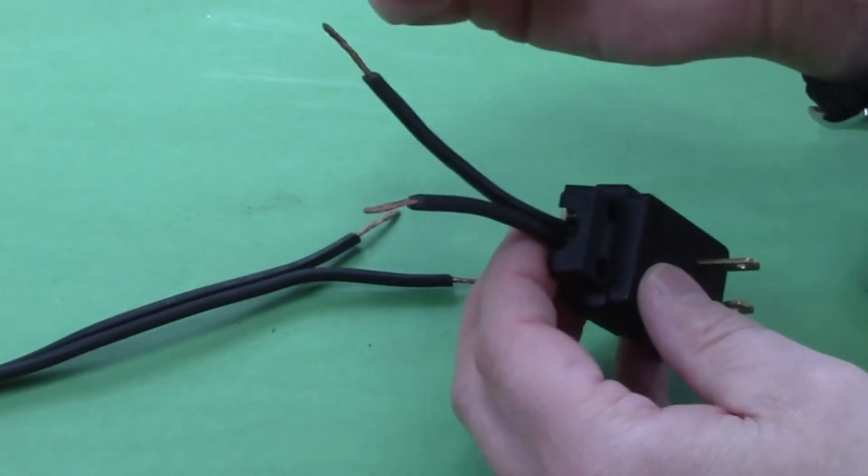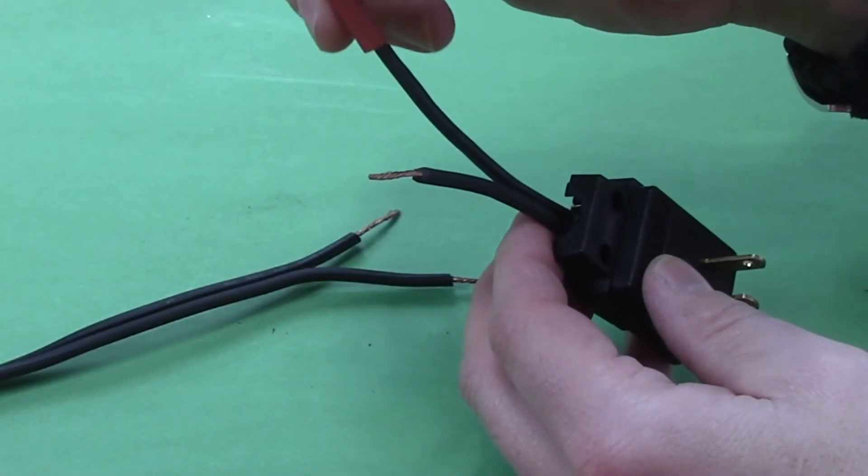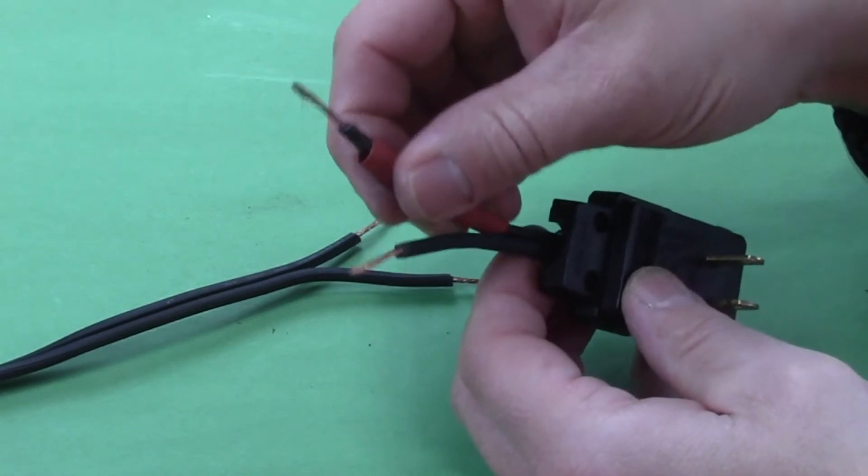So you take a piece of your shrink wrap, slide it over the wire. In this case I'm going on the long end here.